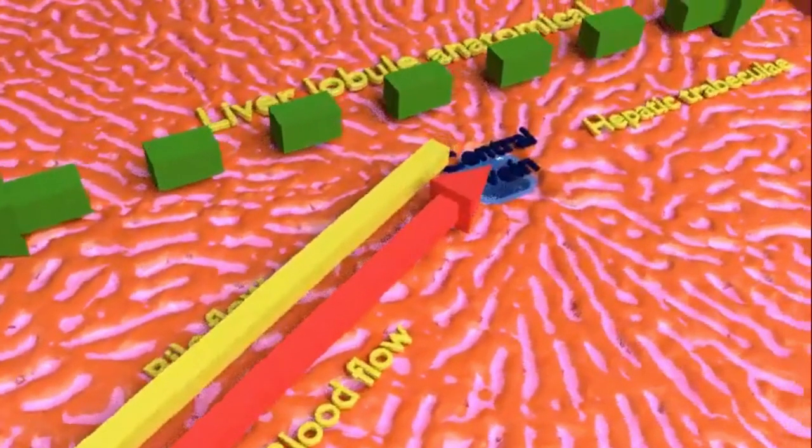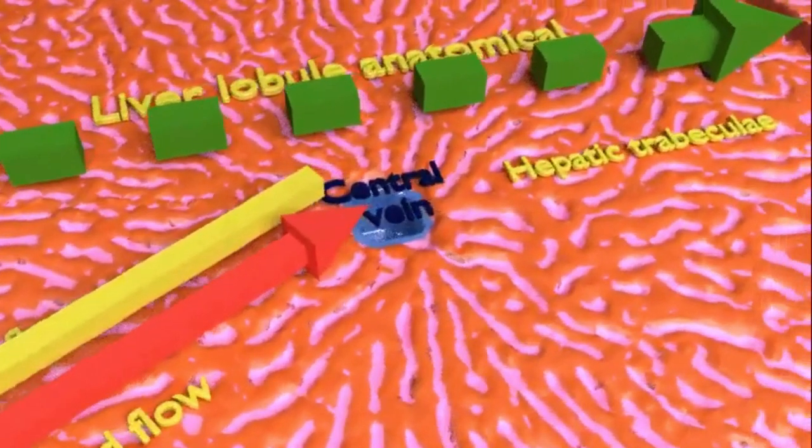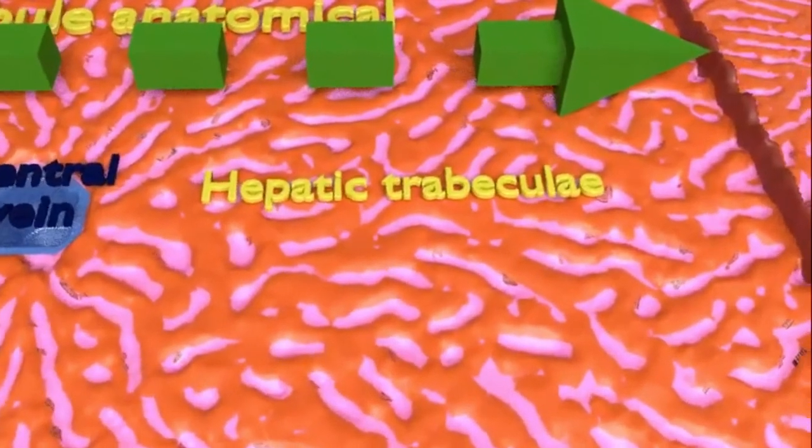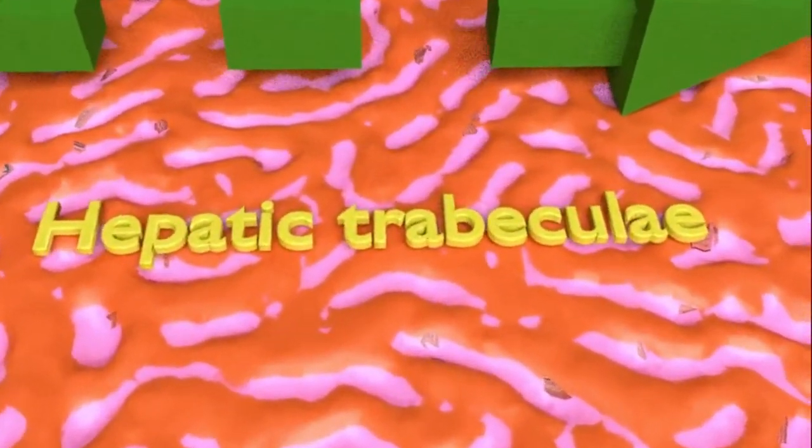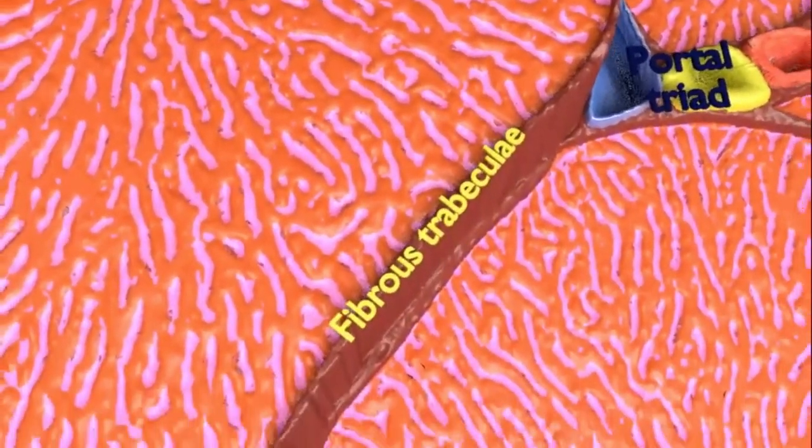This mixed blood ultimately drains into the hepatic vein, which in turn ends up into the inferior vena cava. So viewers, this was all about the liver lobule histology.